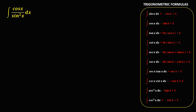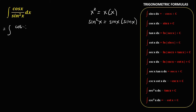The integral of cosine x over sine squared x dx. Since sine squared x is equal to sine x times sine x, we can write this as the integral of cosine x over sine x, times sine x, dx.